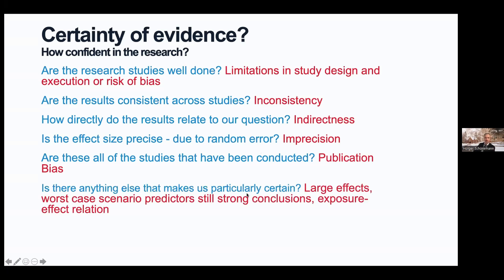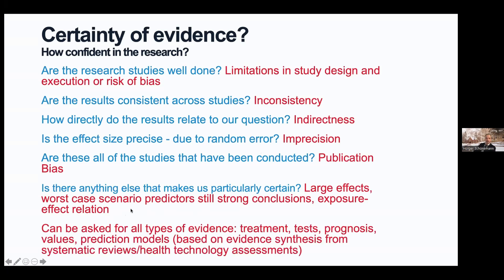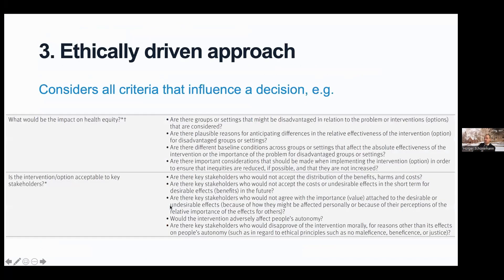The sixth question asks: is there anything that makes us particularly certain? This includes large effects, dose-response relations, and where worst-case scenario predictors still allow strong conclusions. Importantly, these questions can be asked for all types of bodies of evidence — for treatments, tests, prognosis, values, prediction models, environmental health, and PECO-type questions. However, ratings should be based on an evidence synthesis from systematic reviews.